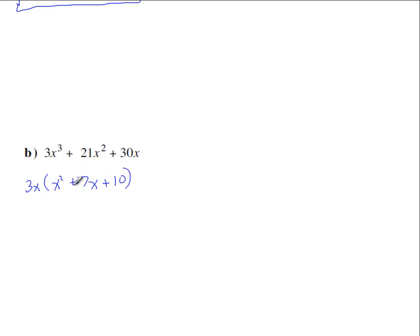So now you need to keep going because there's a possibility that this x squared plus 7x plus 10 could be factored. So if it can be factored, now the x squared coefficient is 1. So if it can be factored, it'd be written in the form of two brackets with x as the first term in each one.